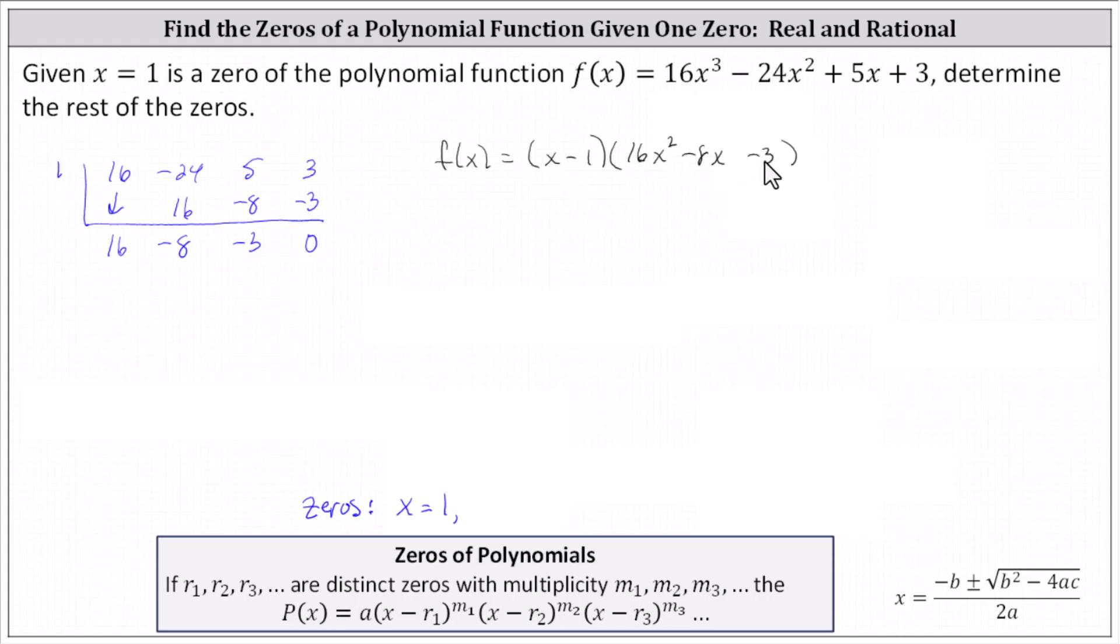And now to find the remaining zeros, let's see if we can factor this trinomial. If it doesn't factor, we would have to find the remaining zeros using the quadratic formula. And if it does factor, it will factor into two binomial factors. This trinomial is a little more difficult to factor because of the first term being 16x squared, not just one x squared.